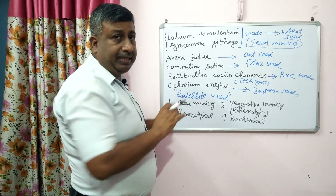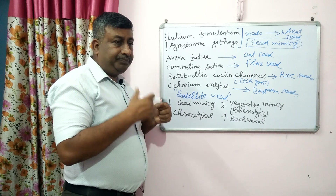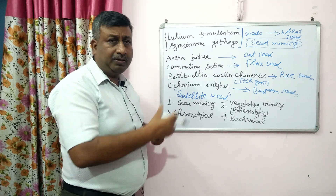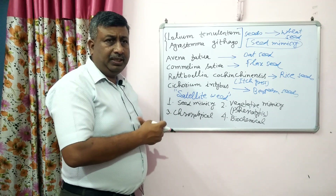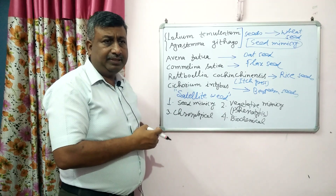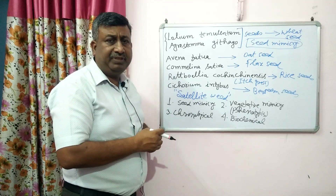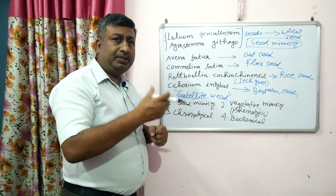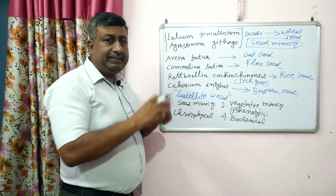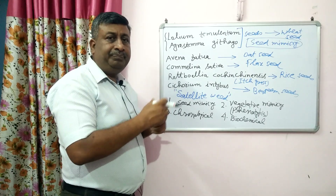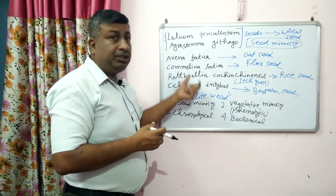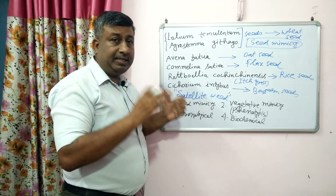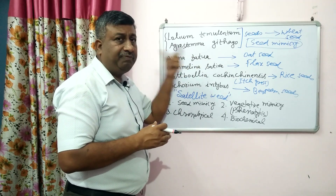Weed mimicry is the mechanism by which weeds survive in the crop and are difficult to identify because they resemble the crop, making them difficult to eradicate or control. In case of seed mimicry, seed shape, size, and weight are similar, and they contaminate the crop. Such weeds are also called satellite weeds.